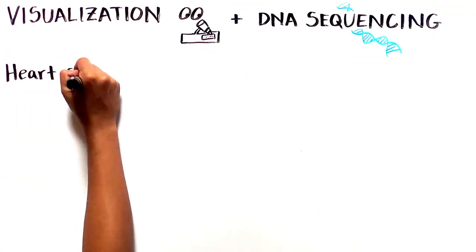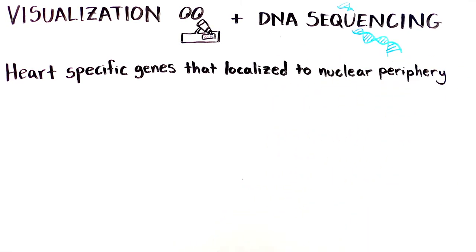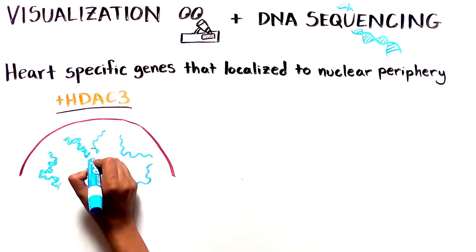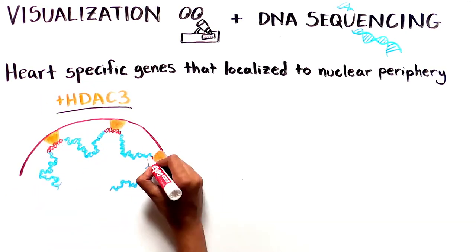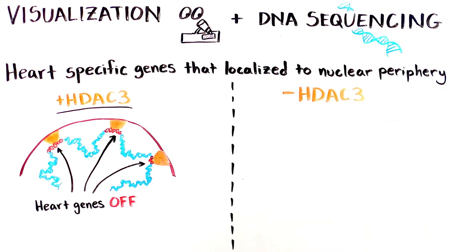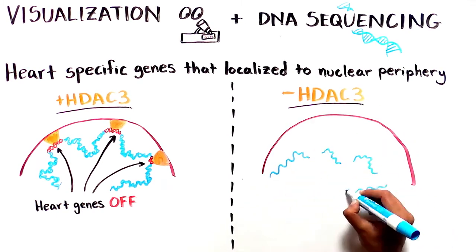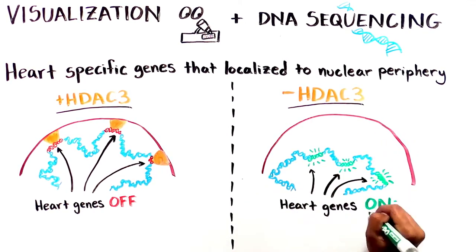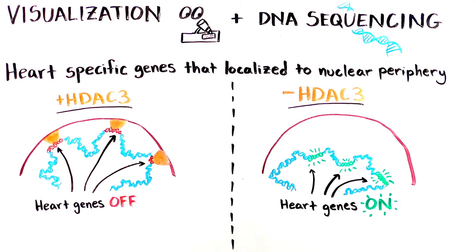This means that in normal conditions, when HDAC3 is present, it prevents heart cell development. But how? By both visualization and DNA sequencing, the researchers found that in these stem cells, heart-specific genes were localized at the nuclear periphery where they are kept silent. It turns out that HDAC3 tethers heart genes to the periphery by linking the genes to the nuclear lamina.